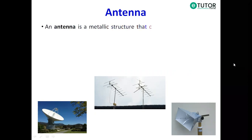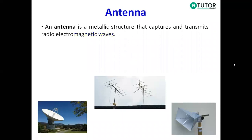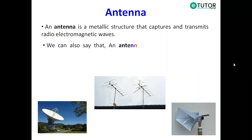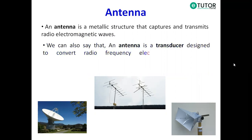An antenna is a metallic structure that captures and transmits electromagnetic waves. We can also say that antennas are nothing but transducers designed to convert radio frequency electrical currents into electromagnetic waves and vice versa.